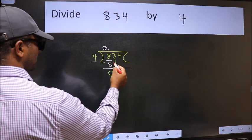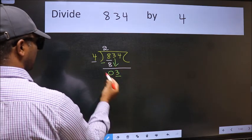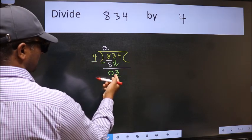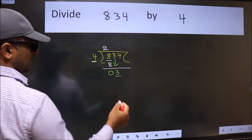After this, bring down the beside number. So 3 down. Now here we have 3 and here 4. 3 is smaller than 4, so we should bring down the second number.